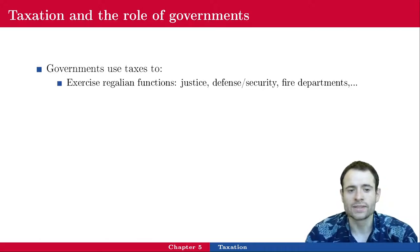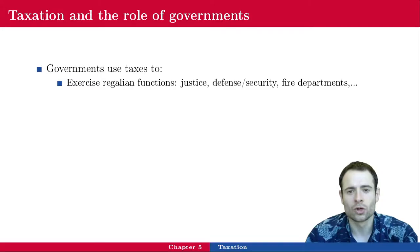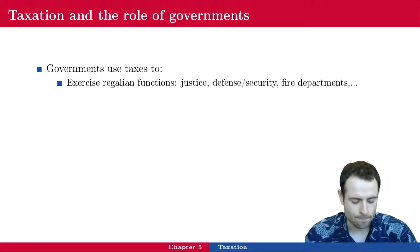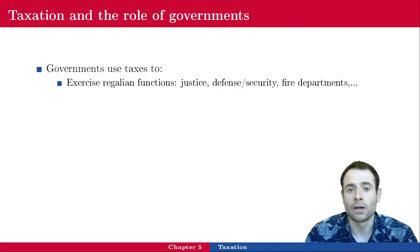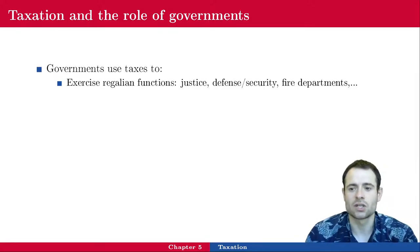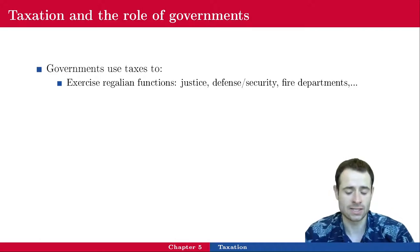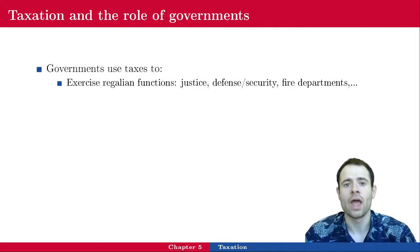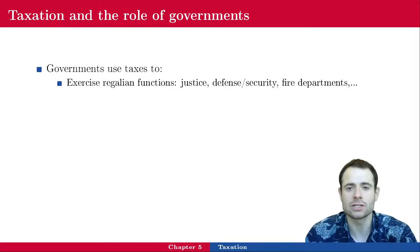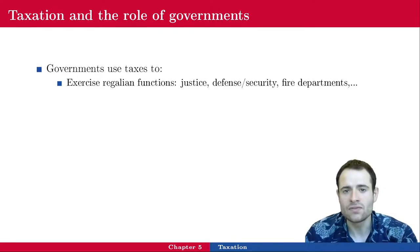Why do governments tax, or rather what do they tax people for? They use taxes to exercise what we call regalian functions. Regalian comes from the French word for king. These are functions that had to be taken care of by the government or kingdom: functions such as justice, defense and security, fire departments, and so on. Other views include education and health, but in some countries the healthcare system or education system are mostly if not fully privately funded.